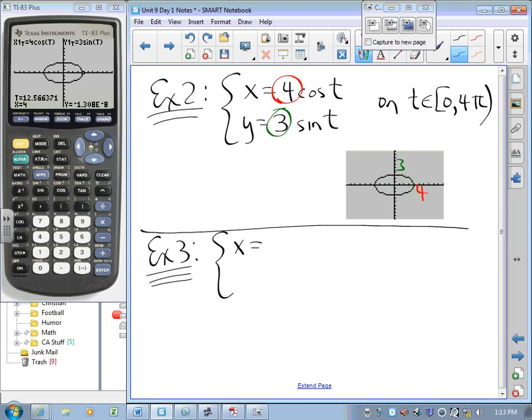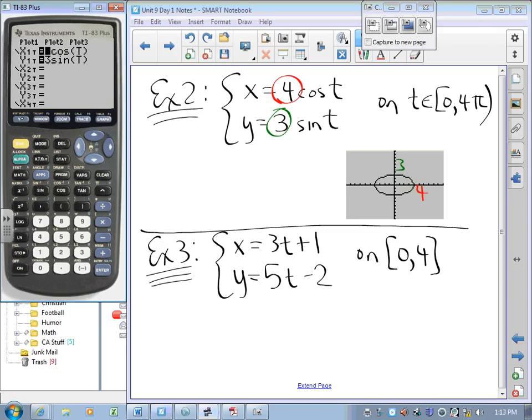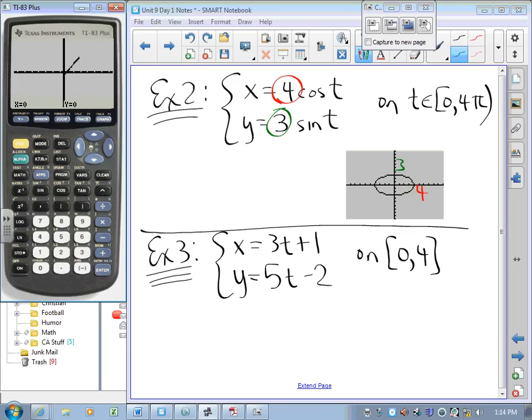Let's let x equal 3t plus 1 and y equal 5t minus 2 on 0 to 4. Time values from 0 to 4. What's that look like? 3t plus 1, 5t minus 2 on 0 to 4. Maybe we'll count up by 1's. I'm going to zoom out a little bit. It's like a line segment. I wonder why it looks like a line segment.